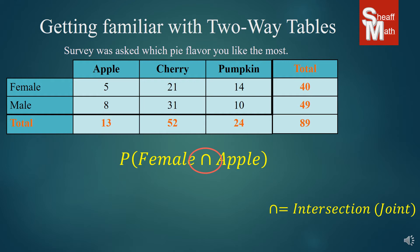What we're going to do is find where female and apple intersect, and they are right there. Out of the entire group of 89, there were five who were female who liked apple pie. We answer this in probability form as a fraction. The probability is the chance of asking a random person and it happening to be a female who liked apple pie — a 5 in 89 chance.